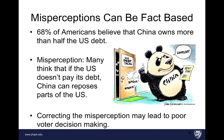Misperceptions can also be fact-based. Thorson uses this example: 68% of Americans believe that China owns more than half the U.S. debt, and many think that if the U.S. doesn't pay its debt, China can repossess parts of the U.S. If we correct this misperception — because China is not going to come and take over the United States — correcting it may lead to poor voter decision-making where people say it's not necessary to have fiscal responsibility or balance the budget. So sometimes the government doesn't wish to correct misperceptions, and those misperceptions are based on facts rather than misinformation.